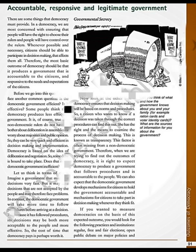Let us think in terms of cost of time. Imagine a government that may take decisions very fast. It may take decisions not accepted by the people and may therefore face problems. But in contrast, the democratic government will take more time to follow proper procedures before arriving at a decision. Because it has followed procedure, its decisions may be both more acceptable to the people and more effective. So the cost of time that democracy pays is perhaps worth it.